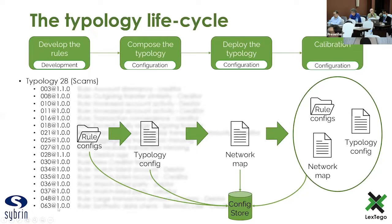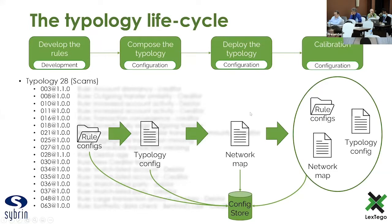After the point where the rules development is complete, the deployment of the rules, the typologies, and connecting that into the flow from the evaluation is handled through configuration only. So there is no need to do any additional development once your rule development is complete. You would drive the behavior of that rule through the configuration, link it into a typology through the typology configuration, drive the flow through the network map, and all of this is stored in a config store. Once that deployment is live, you'd be able to do your ongoing calibration through the configuration of any one of these elements to tweak how your platform operates in your actual real environment.